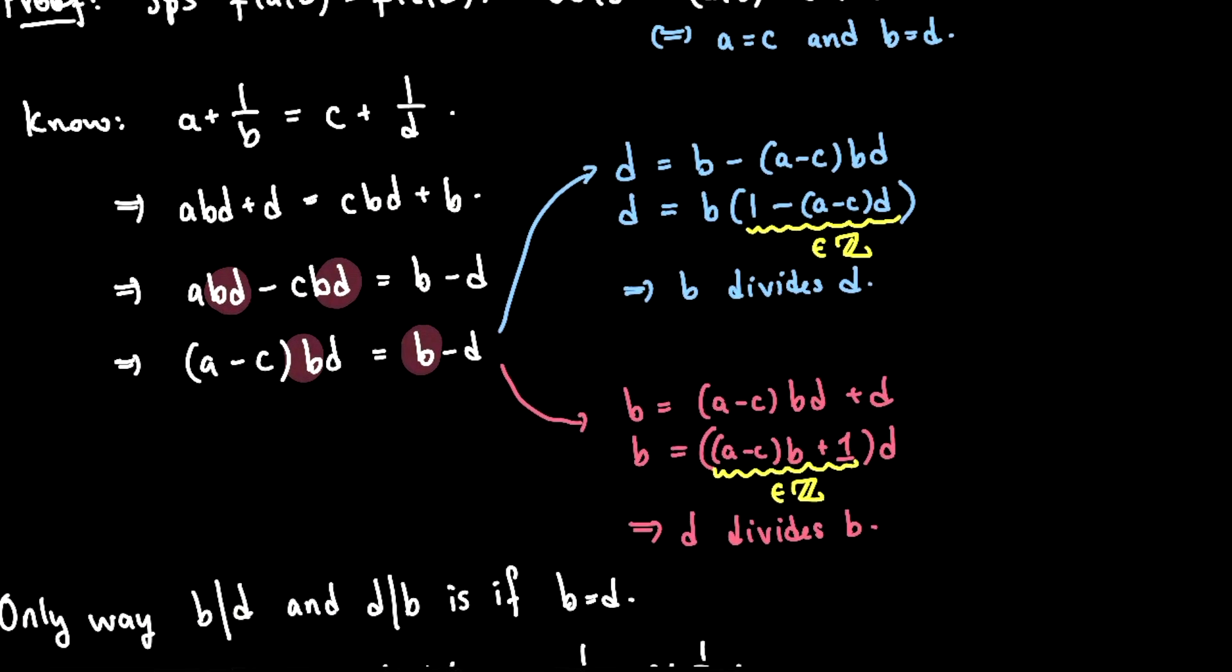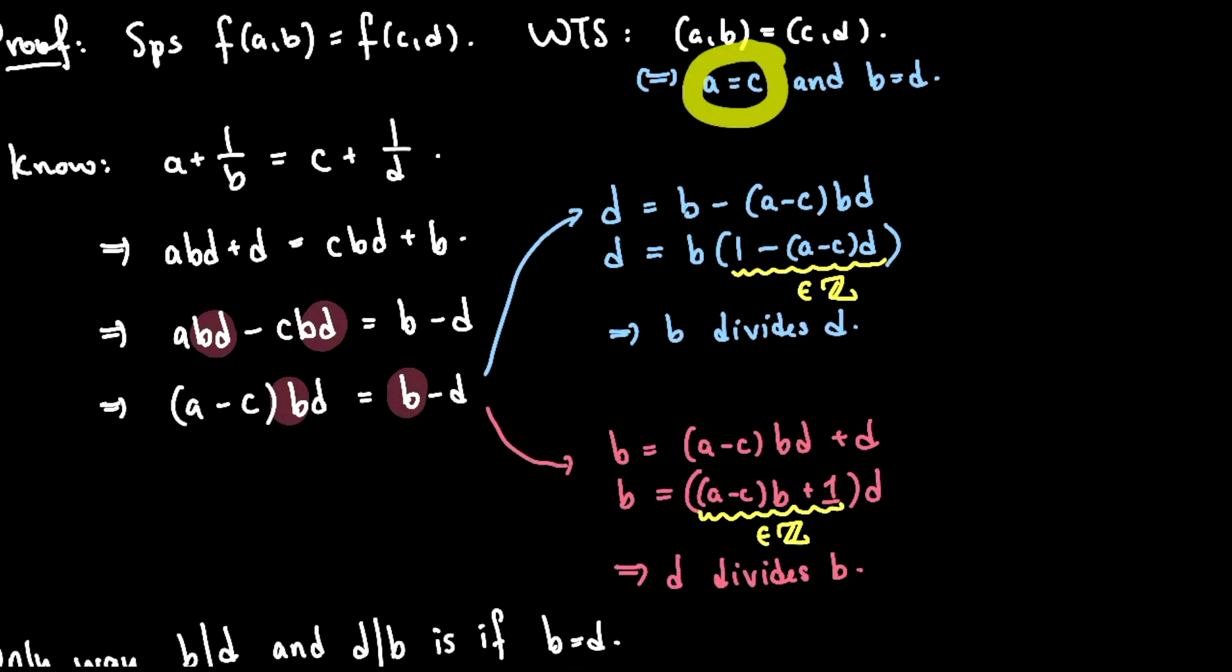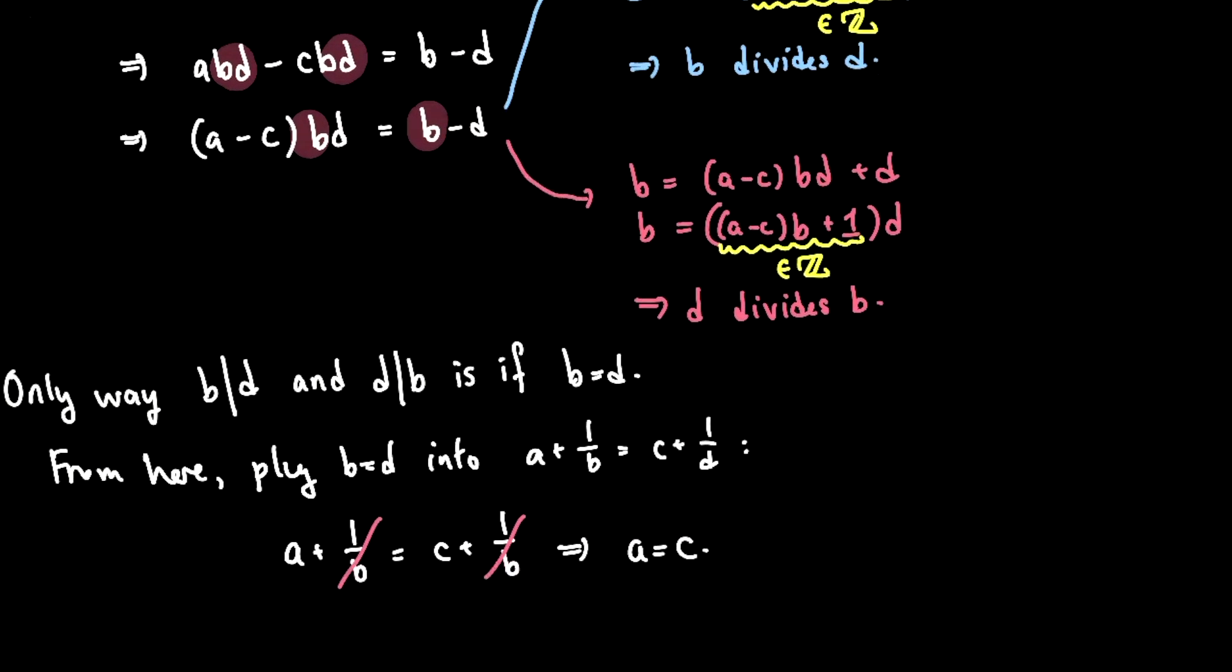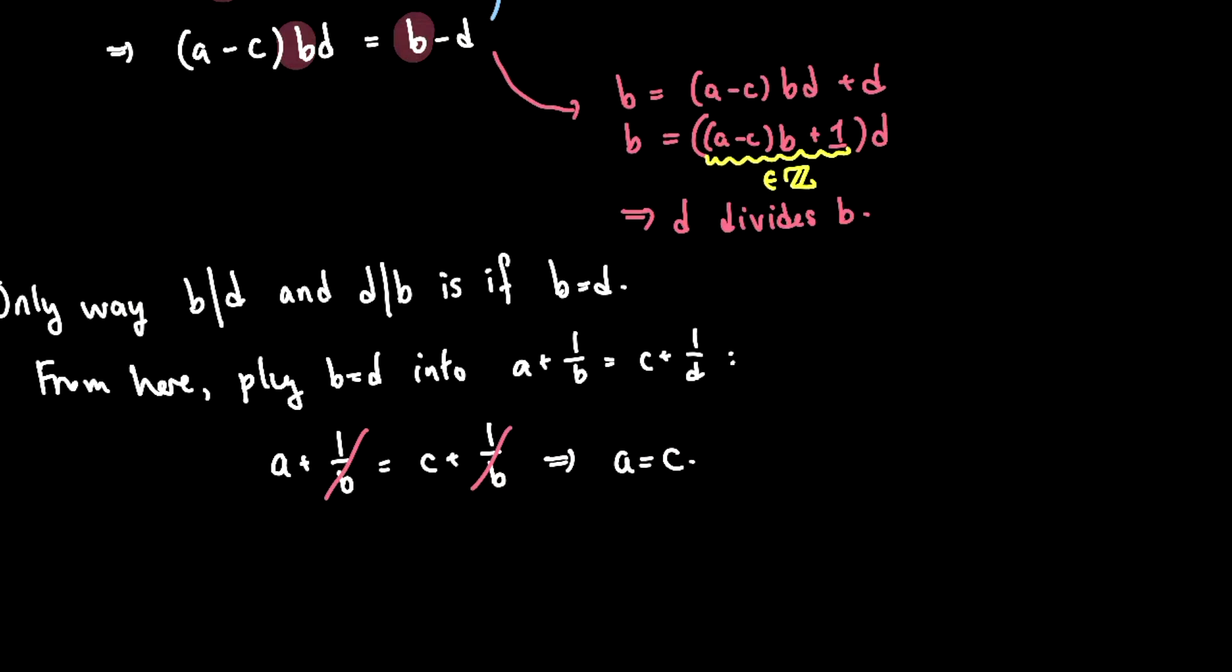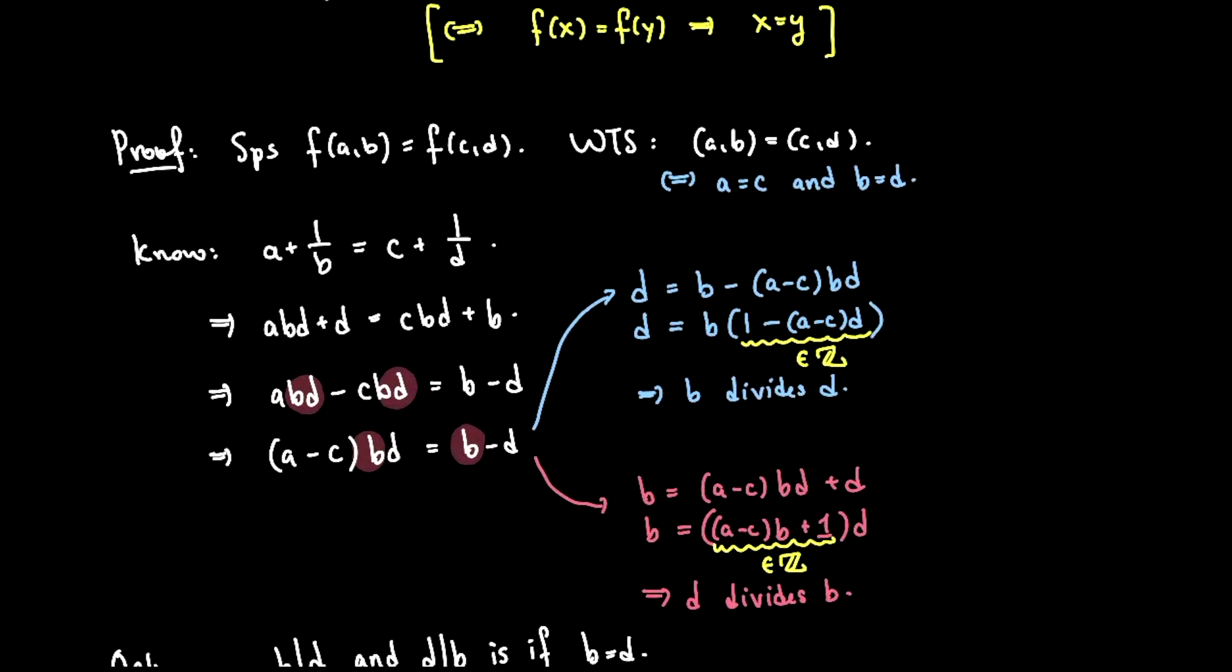So nice, I proved it. I proved that a equals c and b equals d. So that's the end of the proof. It's a nice example of an injective function from n cross n to q. So I'll see you.